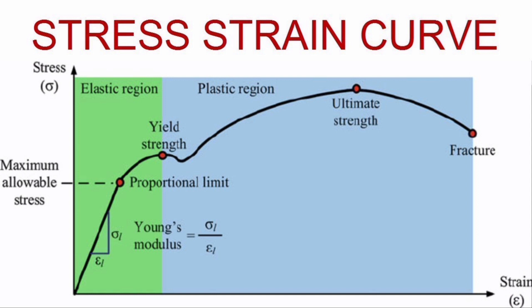In the plastic zone, material will not regain original shape when stress is removed. Plastic deformation is irreversible deformation. Ultimate tensile strength is the maximum strength before failure.